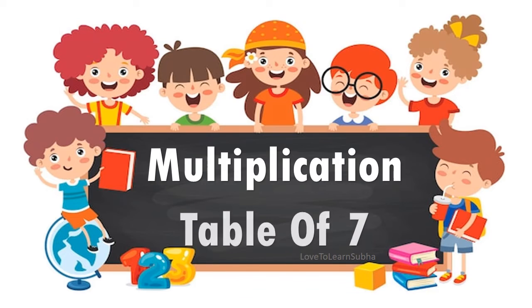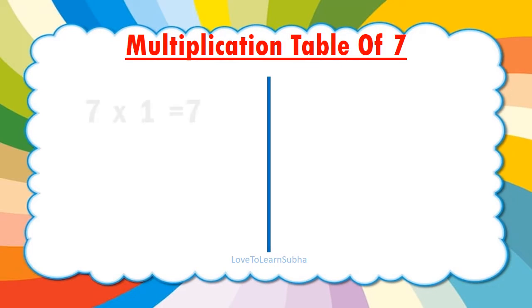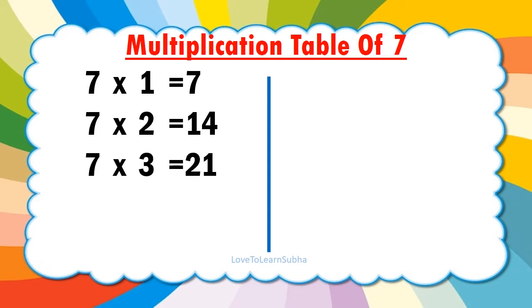Multiplication table of 7. 7 1's are 7. 7 2's are 14. 7 3's are 21. 7 4's are 28.